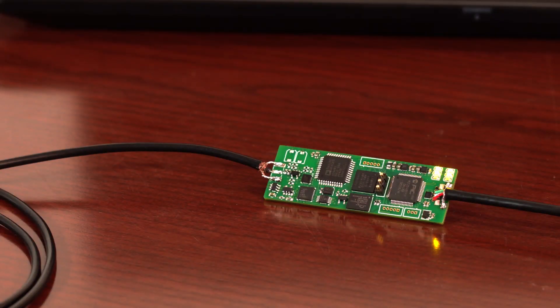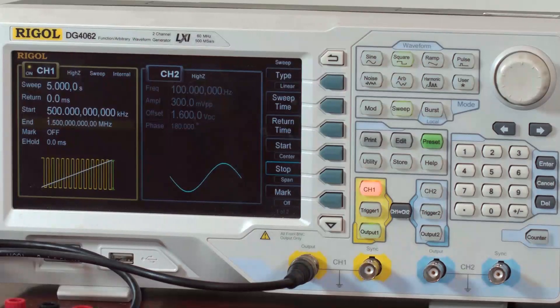Imagine you cut the BNC jack off an oscilloscope probe and replaced it with a USB port. That's essentially what we've done with the Probescope.